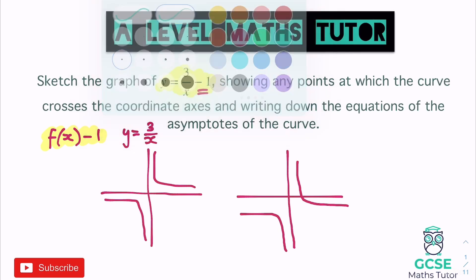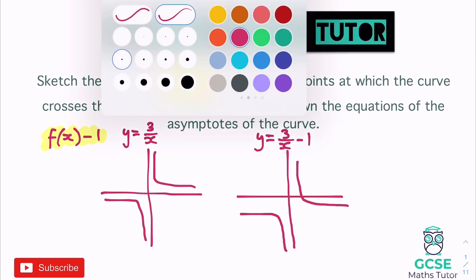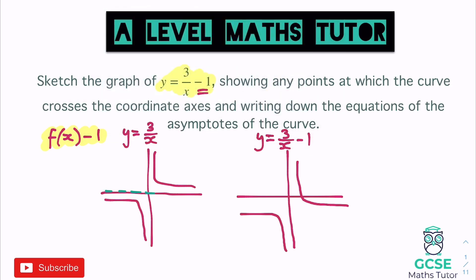Thinking about the asymptotes: originally the asymptote along the x-axis had equation y = 0, but now the graph has moved down by one, so that asymptote moves down to y = −1. The asymptote going up the y-axis, x = 0, hasn't changed because the graph only moved up and down, not left or right. So x = 0 stays exactly the same.